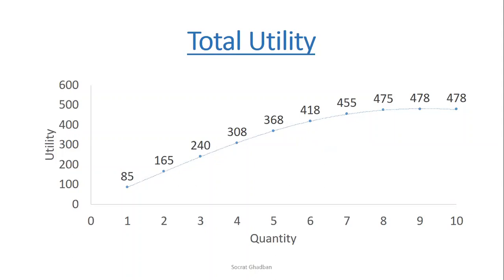Also, in some cases we might reach a marginal utility that is negative, and like this the total utility will start to decrease. It happens when the consumption harms us. For example, if I drink too much water, maybe I won't feel satisfied anymore — in the opposite, I'll feel dissatisfied. So here it's a dissatisfaction, not anymore a satisfaction.